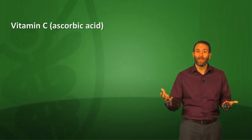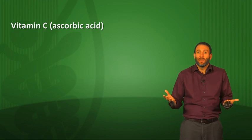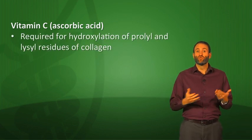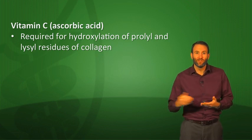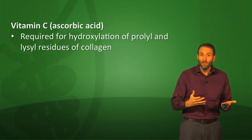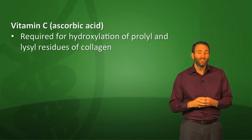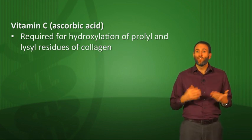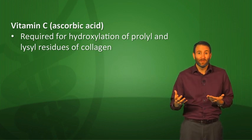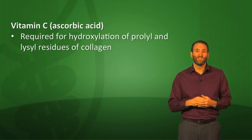Vitamin E is an antioxidant — and what other substances in the body are antioxidants? Vitamin C is a great antioxidant, so we'll go ahead and talk about vitamin C here even though it's a water-soluble vitamin. Vitamin C, also known as ascorbic acid. Its main metabolic reaction is hydroxylation of prolyl and lysyl residues of collagen — hydroxylation of proline and lysine residues — which is very important in the formation of collagen. If you're deficient in vitamin C, you won't be able to make collagen well, which results in the symptoms of scurvy.